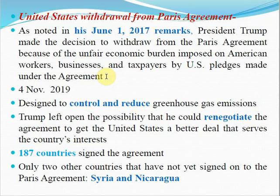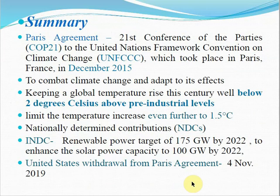President Trump stated that America would be open to renegotiating the agreement on terms they consider helpful to the American economy. Additionally, only two countries had not signed the Paris Agreement at that time: Syria and Nicaragua. The Paris Agreement was initiated at COP 21 to the UNFCCC, which took place in Paris, France in 2015.